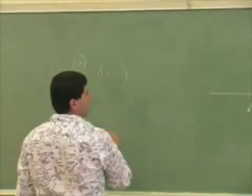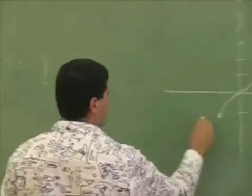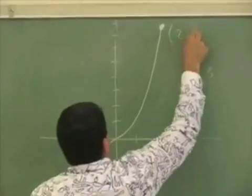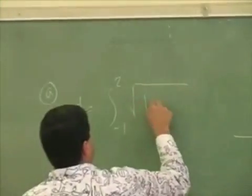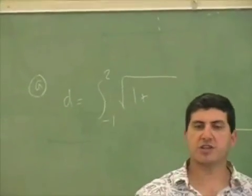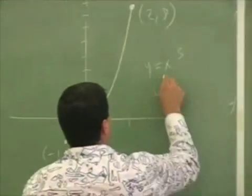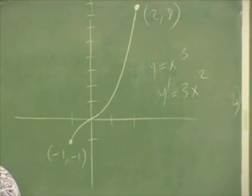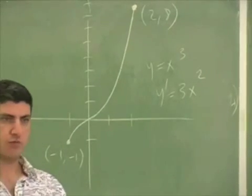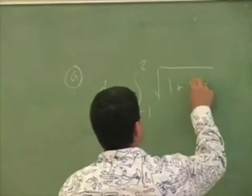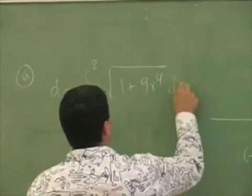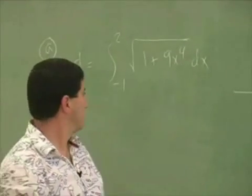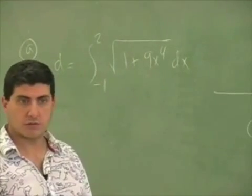D equals the integral from -1 to 2 (starts at (-1, -1), this is (2, 8)) of the square root of 1 plus (the equation is x³, right, so take the derivative of that) 3x². But then you've got to square the derivative, which gives you 9x⁴ dx. So the integral of square root of 1 + 9x⁴ from -1 to 2.